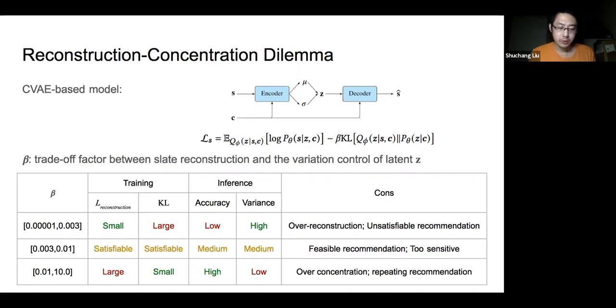However, it will focus less on reconstruction as a result, so it will become less effective encoding the various slates from the training data, and the latent z becomes less informative. The resulting output will mostly rely on the given condition c and concentrate on prototype slates, which repeatedly generates the same output.